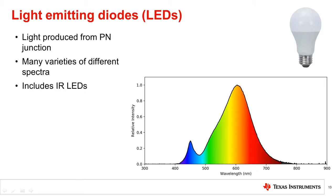The final light source we will discuss is the light emitting diode, or LED. LED light sources generate light as electrons pass through the band gap of the p-n junction in a diode. There are many different types of LEDs for different wavelengths of light.